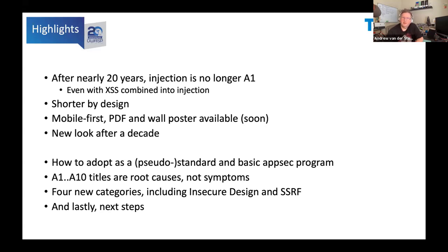We've also gone after a new look — you can see the OWASP Top 10 iconography has changed. We've also finally given in: back in 2007 I wrote in the foreword 'please don't use this as a standard,' and of course it was immediately adopted as one, embedded into PCI DSS among others. So we've talked about the way you can actually use it as an entry-level standard and as a very basic AppSec program. We've used modern thinking to encourage an effective, tangible AppSec program, because your attacker does not care about your risk register.